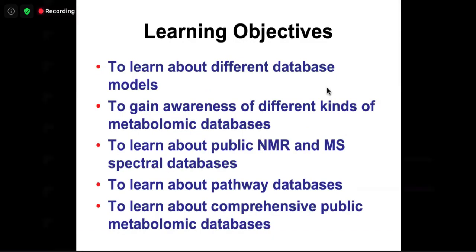We're learning about a range of metabolomic databases used by various programs and groups to help with compound annotation. That's a common theme for today — whether it's NMR, GC-MS, or LC-MS — to get annotations or names to those peaks and information about their concentrations. Tomorrow we'll focus on interpreting that data, and I'll also highlight pathway databases, which are linked to tools like MetaboAnalyst and also help with interpretation.